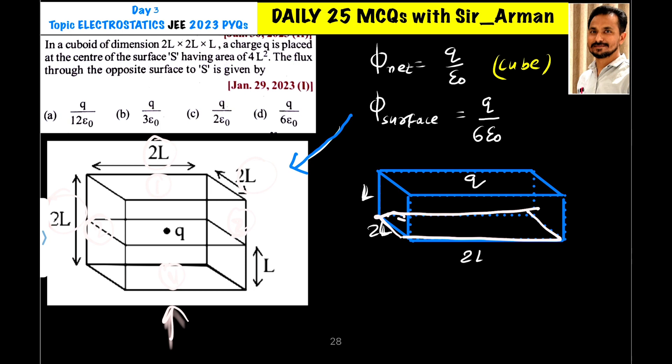If the flux through the cube is Q by epsilon 0, then through each surface is Q by 6 epsilon 0 because this flux is divided among six surfaces. The correct answer is Q by 6 epsilon 0.